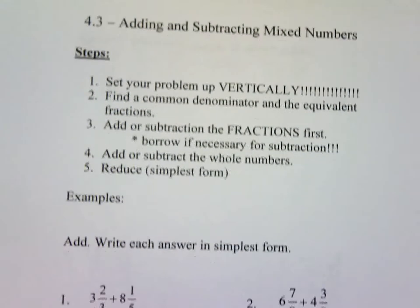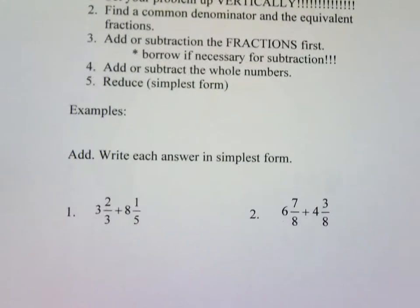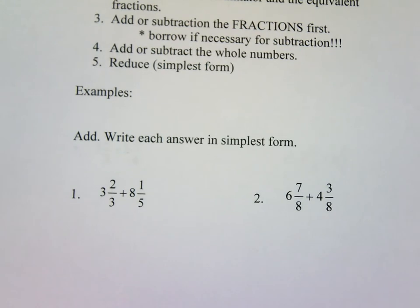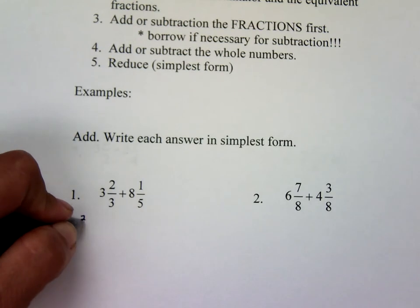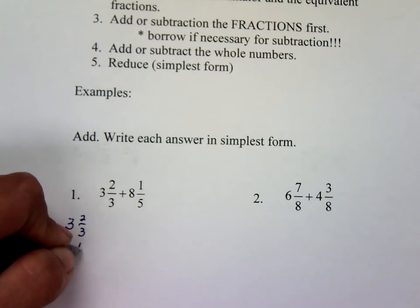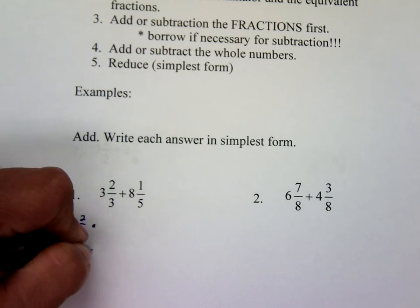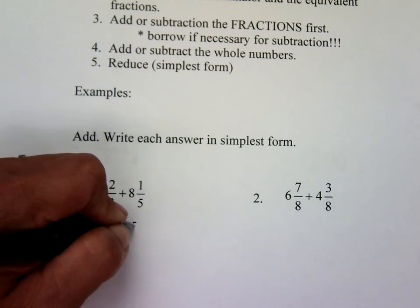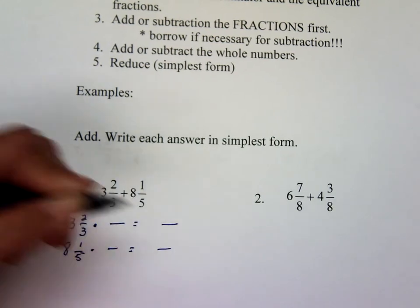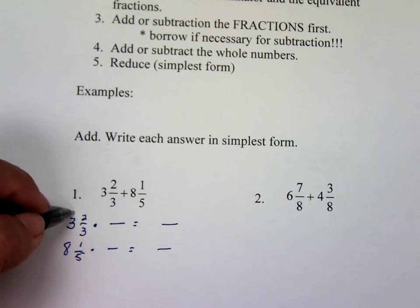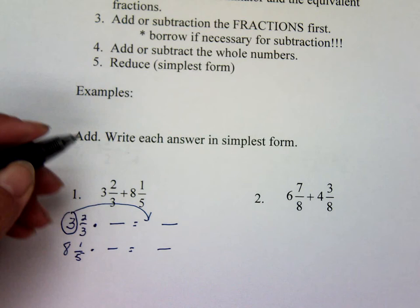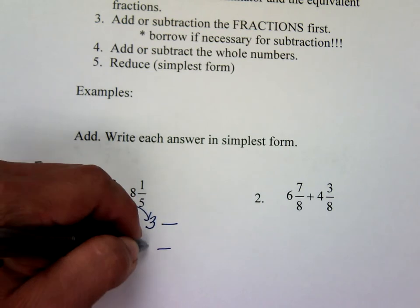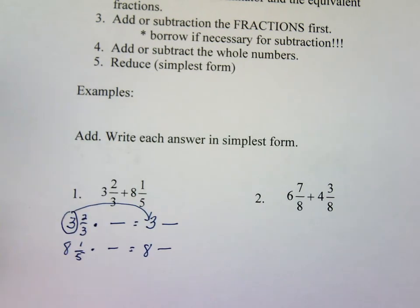Here is your example for addition. Let's look at number one, and then you can do number two on your own. First you have to put your problem vertically. So you have three and two-thirds, and eight and one-fifth. Just like yesterday, you do your setup, except you're going to bring your whole numbers over to that side. So you put a three here and an eight here.